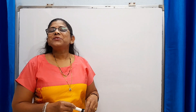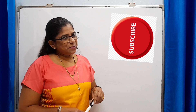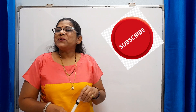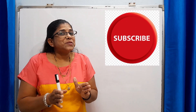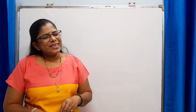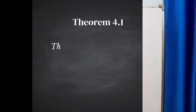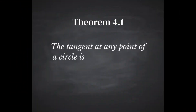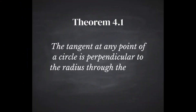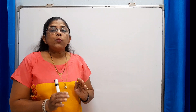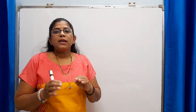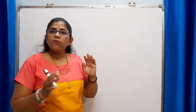I would like to request all of you to subscribe to the channel so that you will get regular updates of such useful videos. Now let's start with the first theorem of this circle chapter. The first theorem is: the tangent at a point of a circle is perpendicular to the radius through the point of contact. Let us draw the figure required for this theorem.